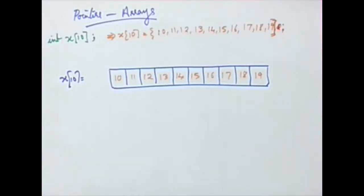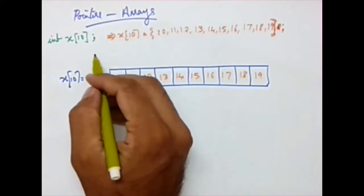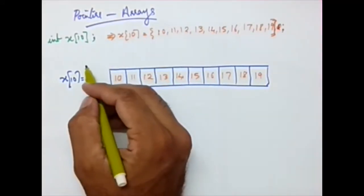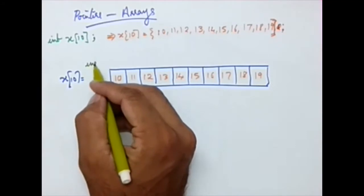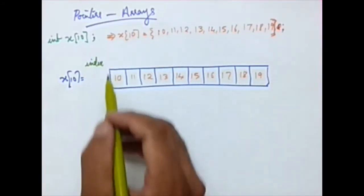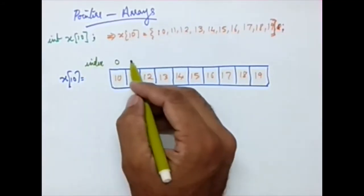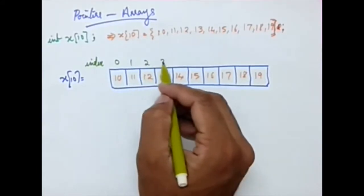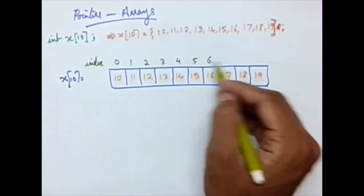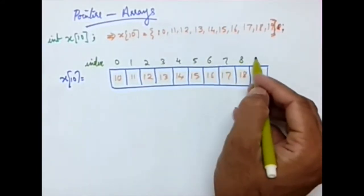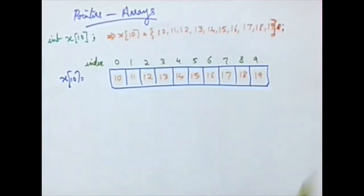We can see the different characteristics of an array. The first one is the index. Index is basically 0 for the first variable, then 1, 2, 3, 4, 5, 6, 7, 8, and 9. This is the indexing.